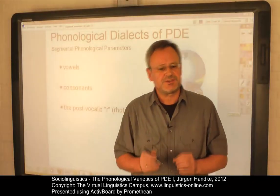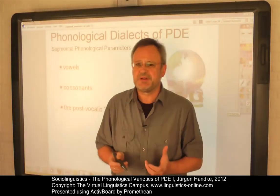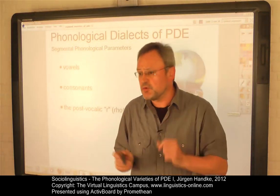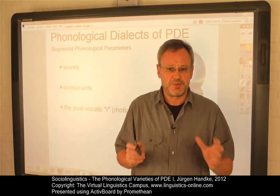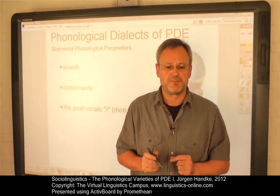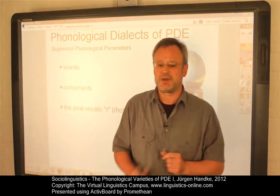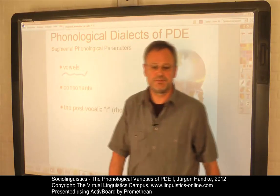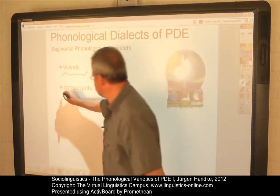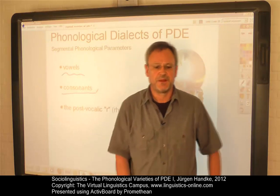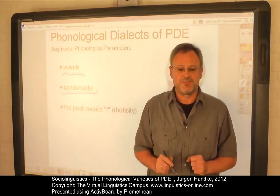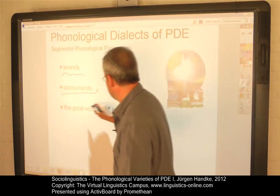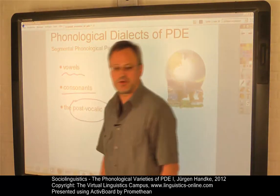This e-lecture discusses the fundamental segmental phonological parameters to keep the phonological dialects of present-day English apart. This includes variation in the system of vowels, the discussion of some selected consonants and their particular realization, and more general aspects such as the use of the post-vocalic R.